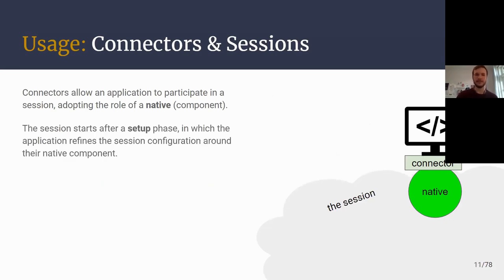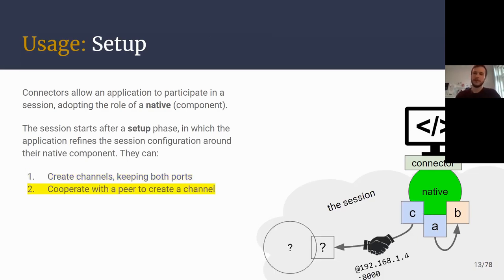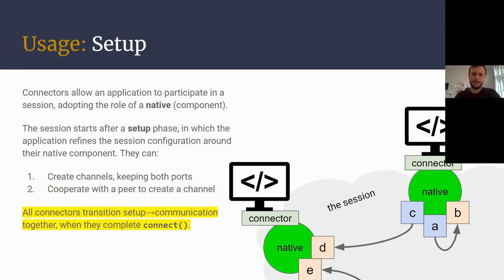As far as practicalities go, the application gets this connector and begins in a setup phase. You can set up communication channels — here a channel is being created and both ports given to the native component. To distribute this over the network, you can participate cooperatively with some other connector using an IP address to rendezvous. All connectors involved in the session end the setup together when they complete this connect call, and then communication begins.